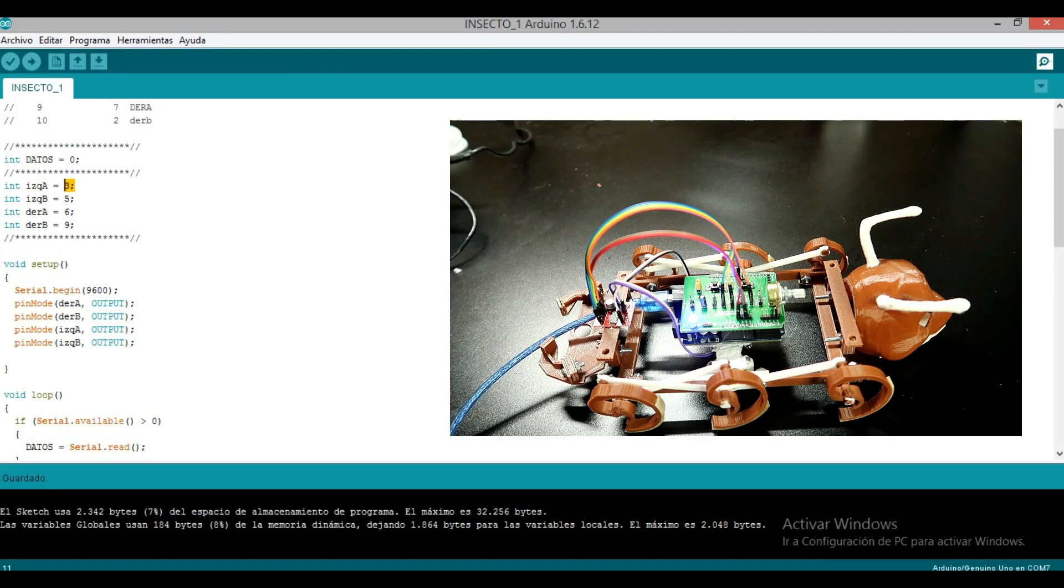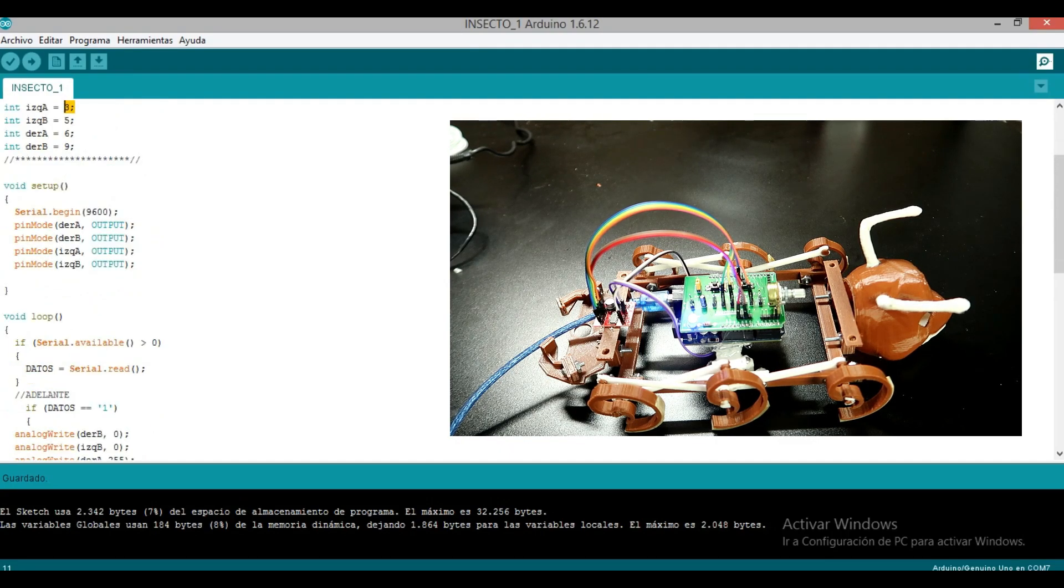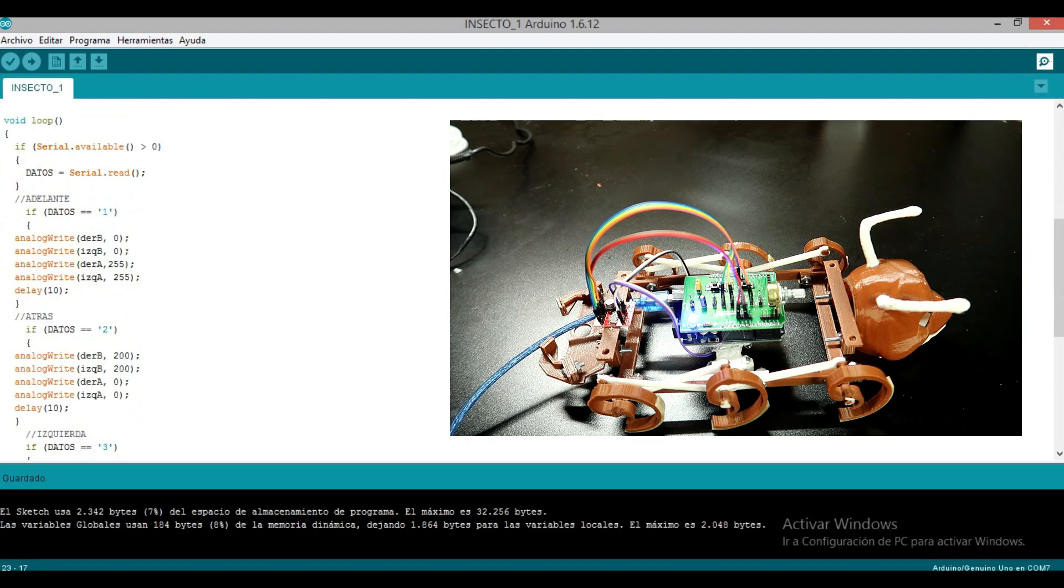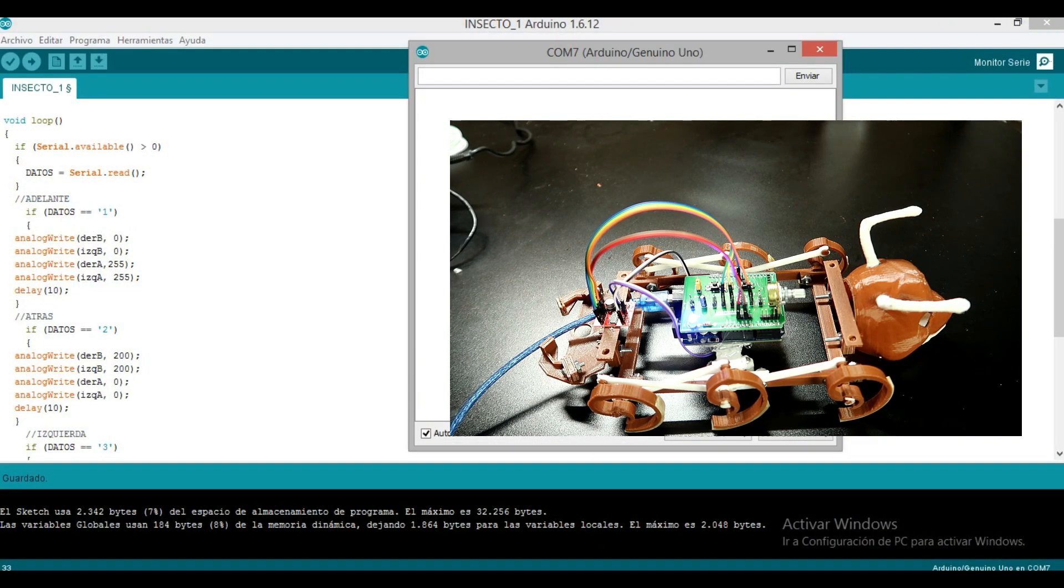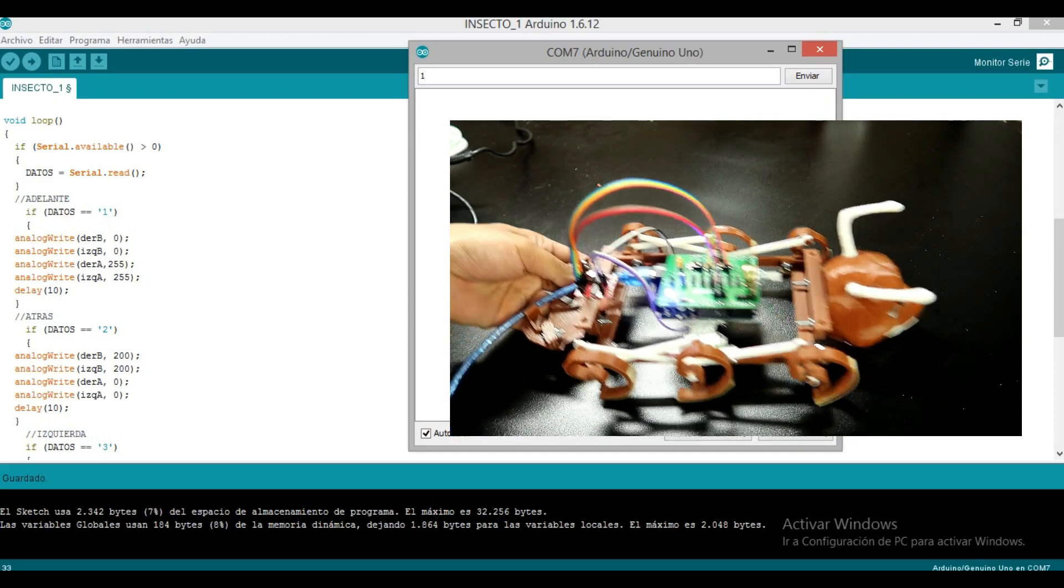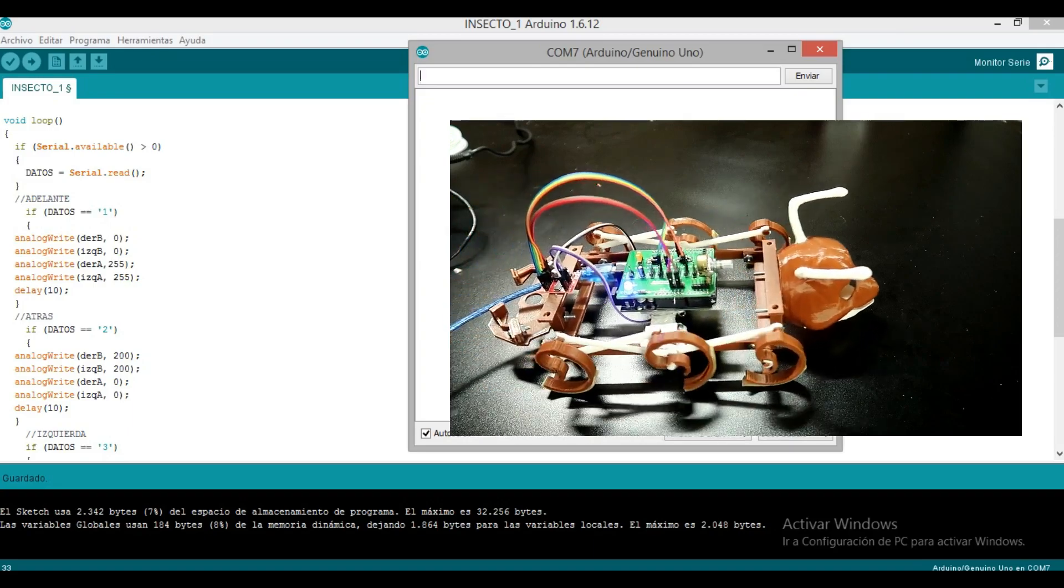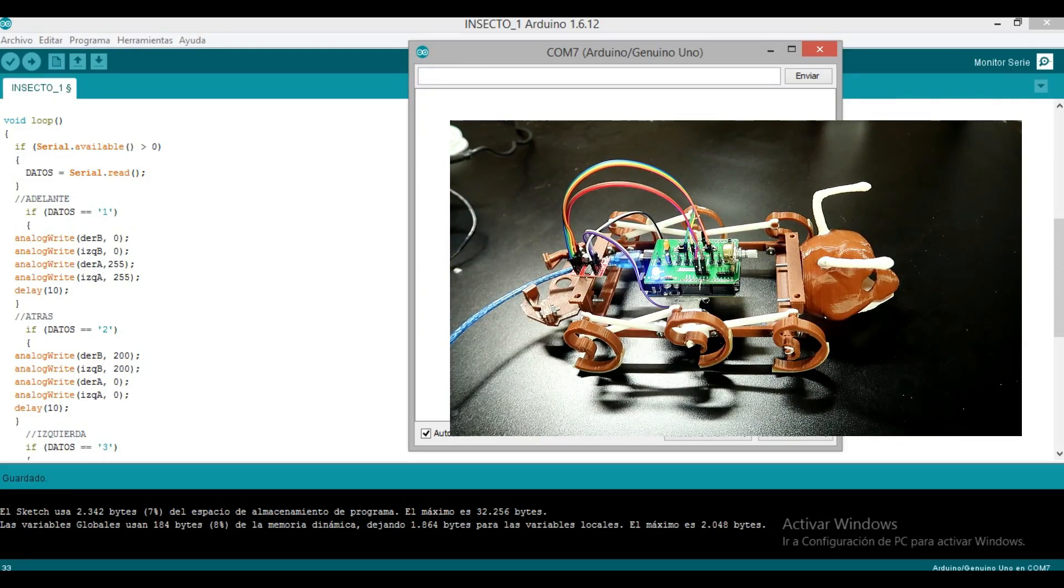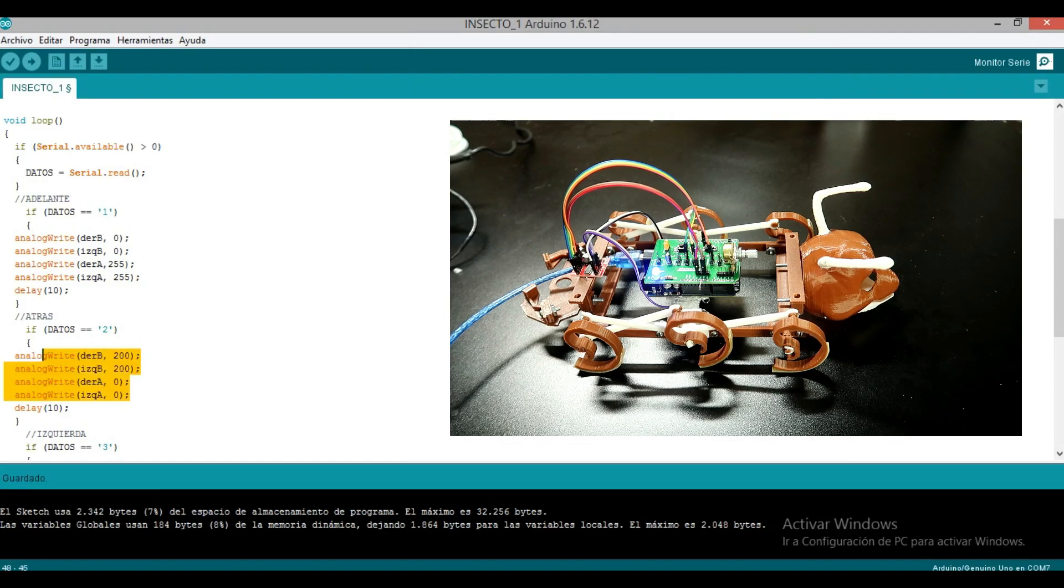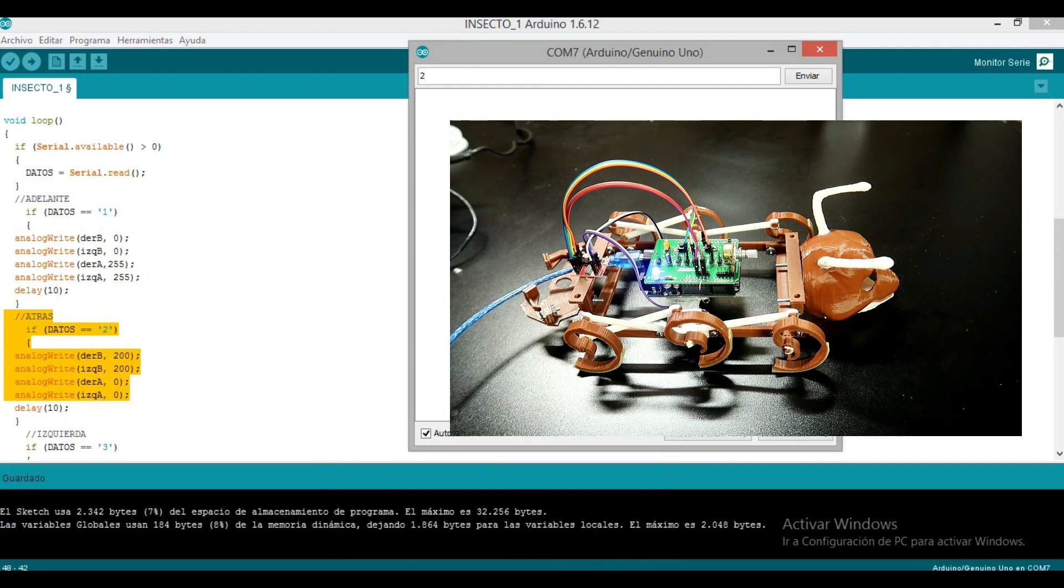Lo que vamos a hacer es mediante la comunicación serial a 9600 baudios vamos a habilitarlos como salidas nuestros pines justamente para poder enviar nuestros datos y controlar a nuestro pequeño insecto. Lo primero es preguntar si la comunicación serial ha sido habilitada, va a leerlo. Si tenemos un 1 debe ir hacia adelante. Vamos a probarlo. Voy a poner 1 y lo voy a enviar. Efectivamente funciona, vean, ambos van hacia adelante. 5 significa detenerse. 2 significa hacia atrás. Funciona muy bien.